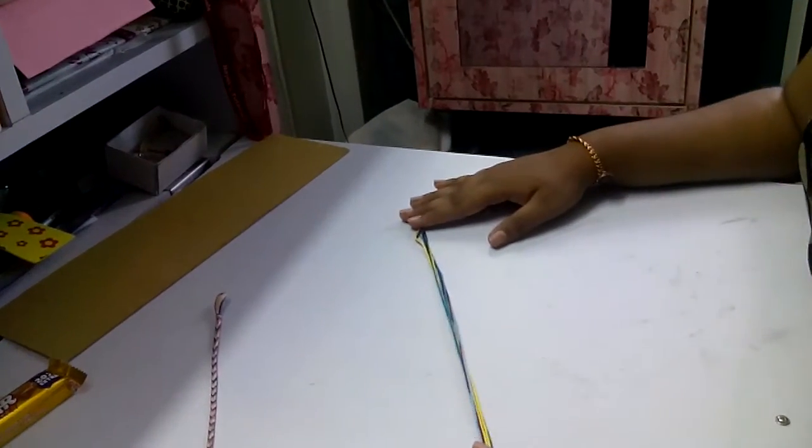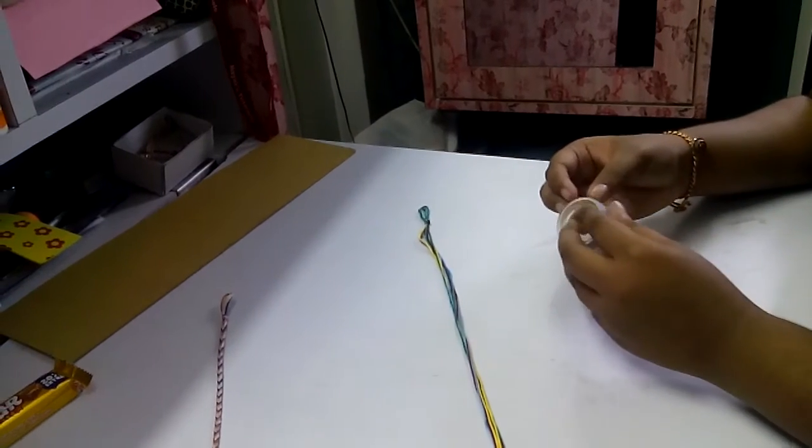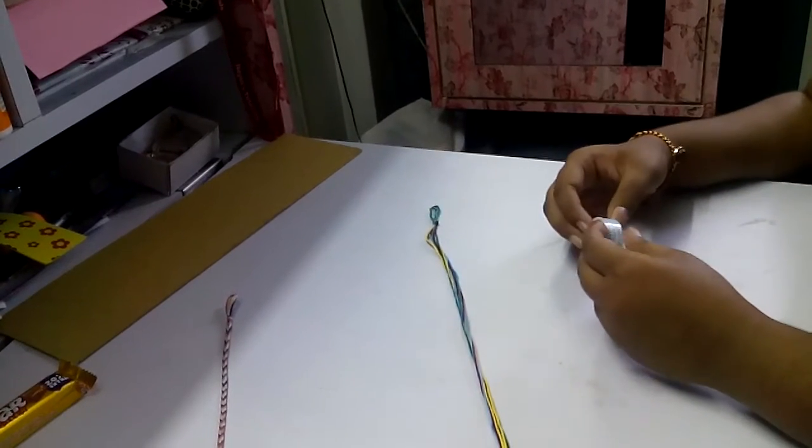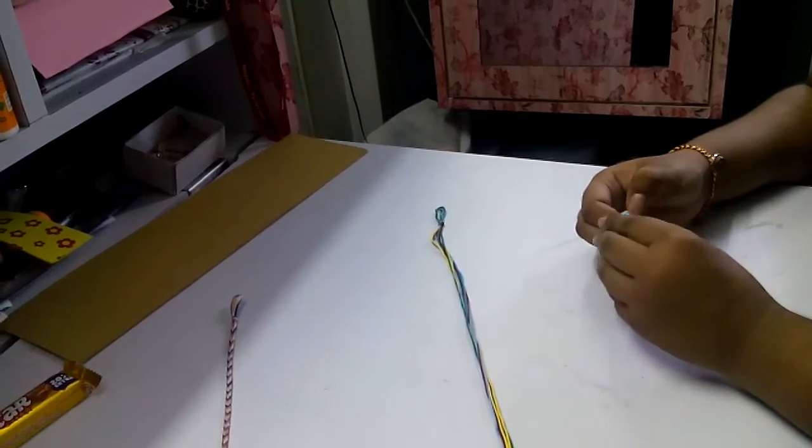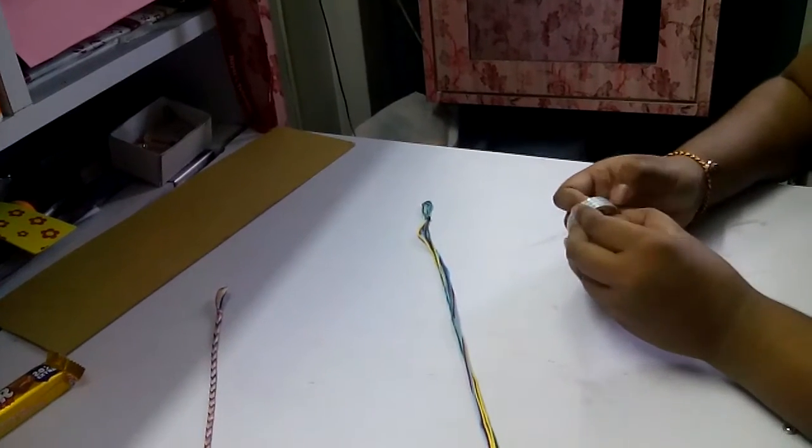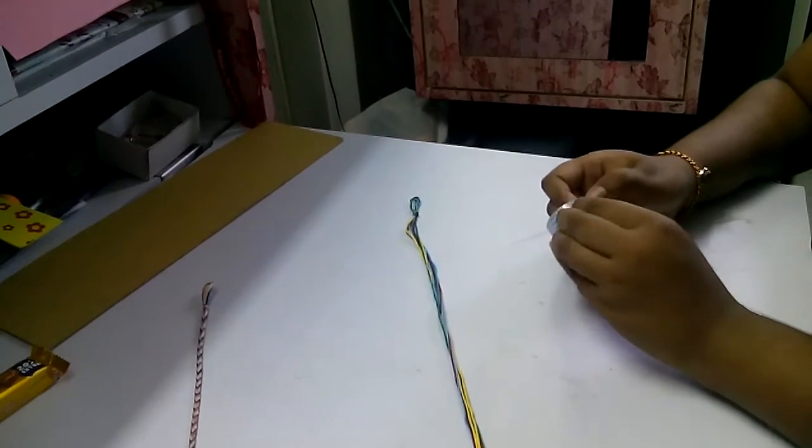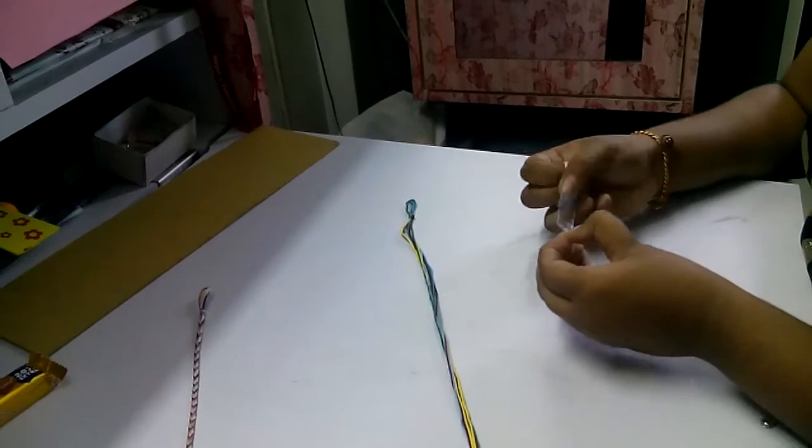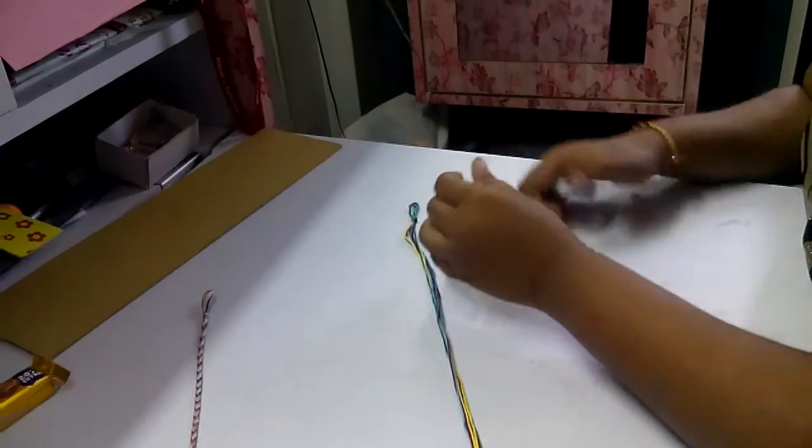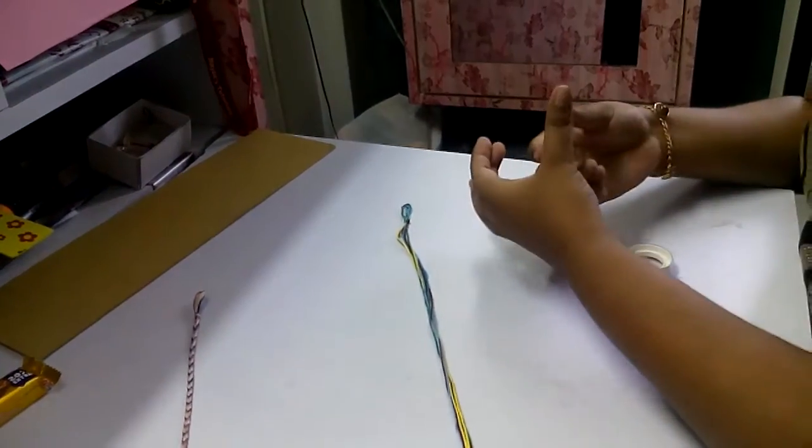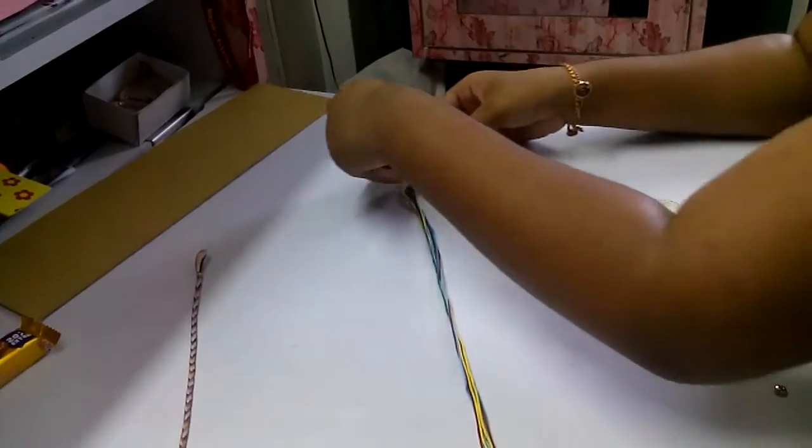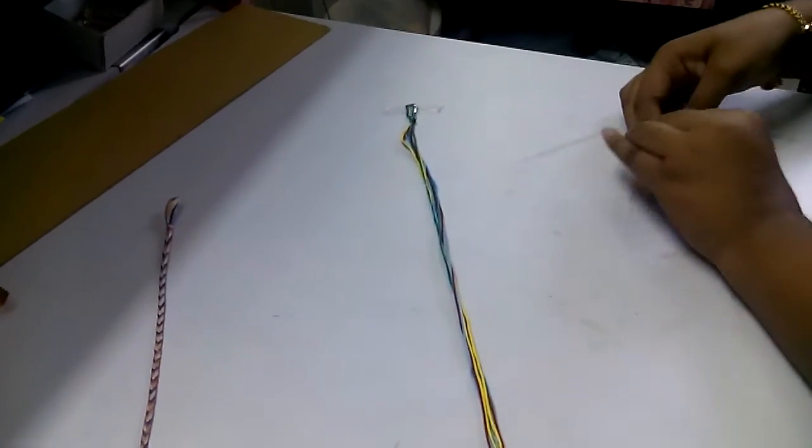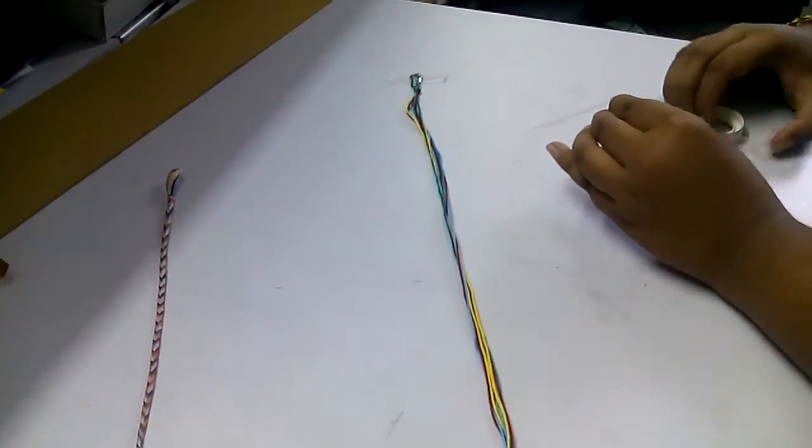Take your thread like this, tie a knot by making a loop, then tear a piece of tape and stick it on. This prevents it from flying in the air. Stick it nicely so it doesn't move.